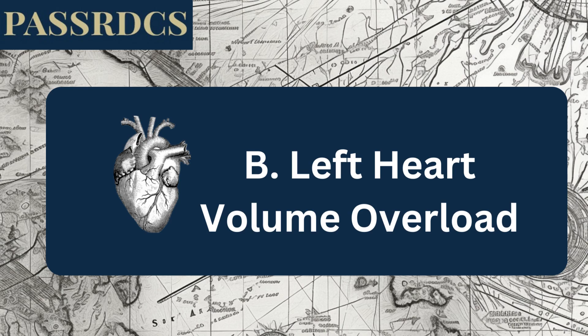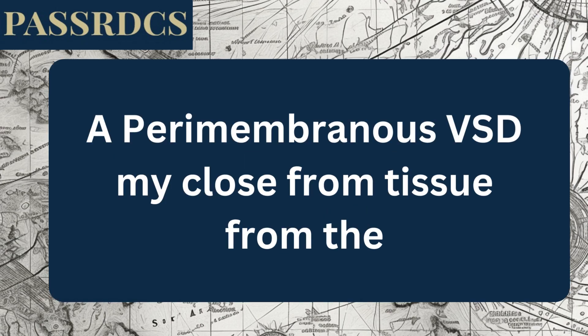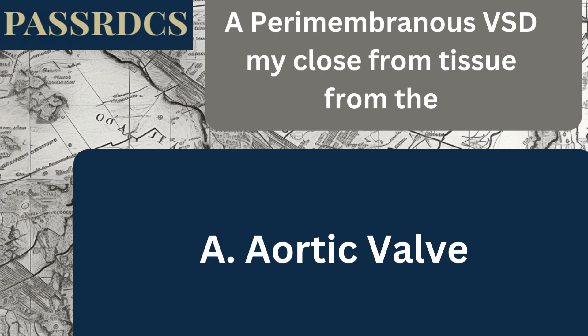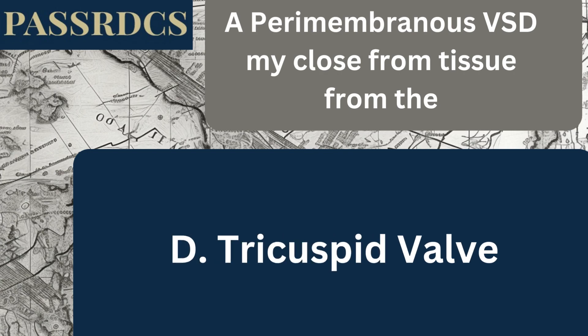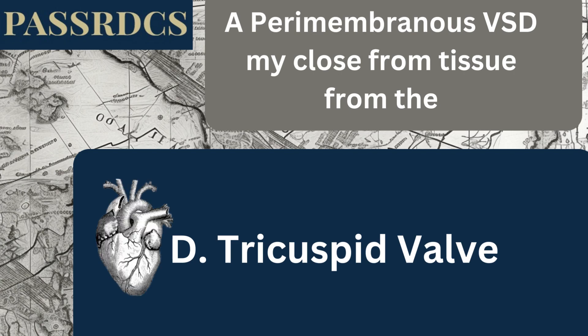If you have a perimembranous VSD, this may close by itself with tissue from which valve: aortic, mitral, pulmonary, or tricuspid? The group chose tricuspid valve, which is the correct answer. The tricuspid valve, as we'll see anatomically, is very close to the perimembranous VSD, and this tissue is used to close it.